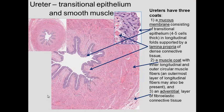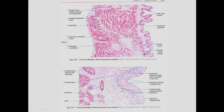Here we see a ureter. The ureter has transitional epithelium, a lamina propria, and a muscle coat with inner circular and outer longitudinal muscle. It also has adventitial tissue attachment.